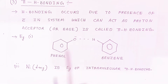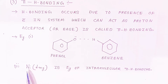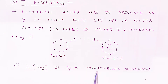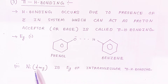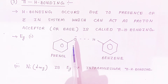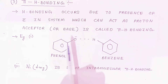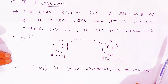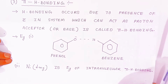An example of intramolecular pi hydrogen bonding is nickel DMG complex, while phenol-benzene is an example of intermolecular pi hydrogen bonding. These two examples demonstrate hydrogen bonding arising due to pi electrons.